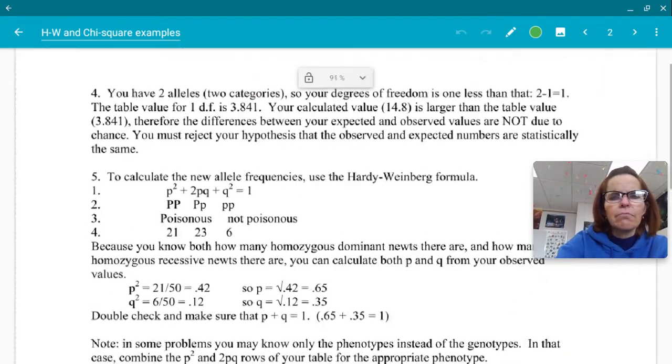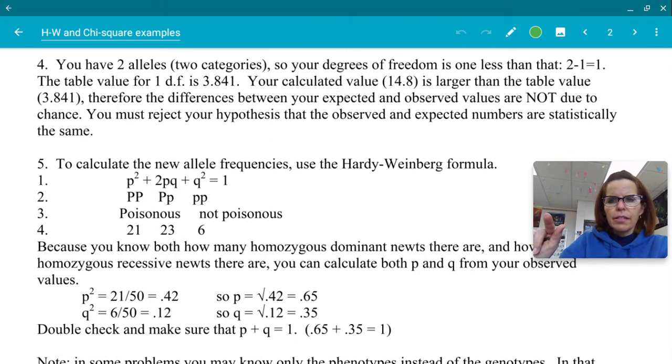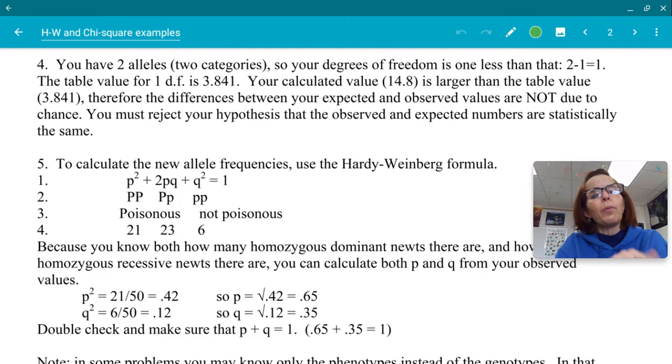So this does get a little bit annoying. It says you have two alleles. You had the dominant and the recessive. So they count that as two categories. Even though we had homozygous dominant, heterozygous, and homozygous recessive, we're still saying you have a P and a Q. So your degrees of freedom is one less than that. So two minus one. Remember, you always subtract one from your categories. So two minus one. So your degrees of freedom is just one. Now, we need to talk a bunch about that because it gets confusing.